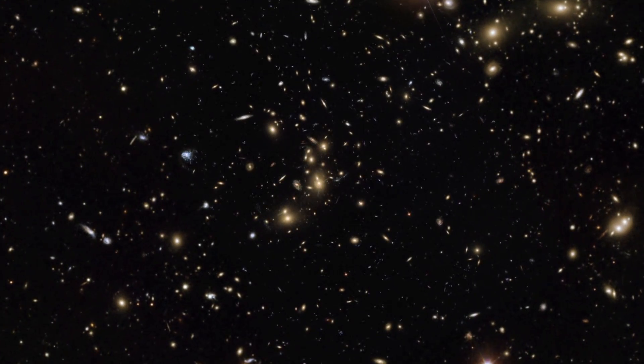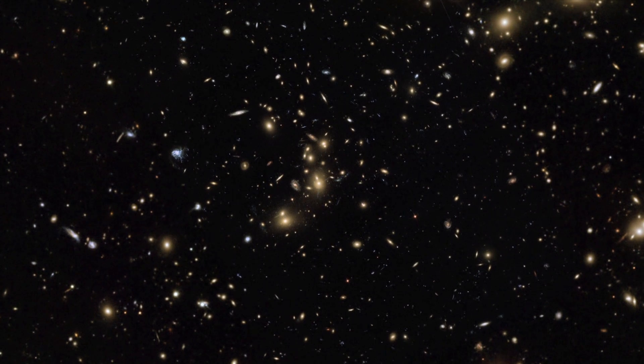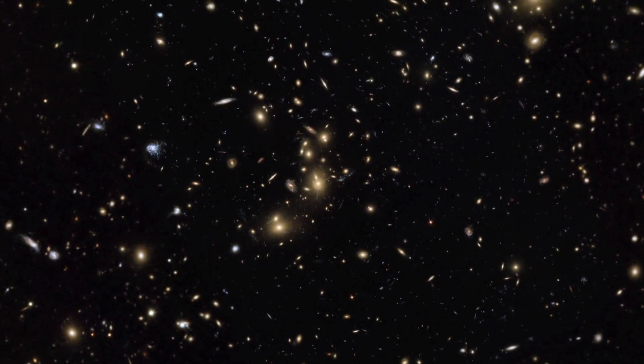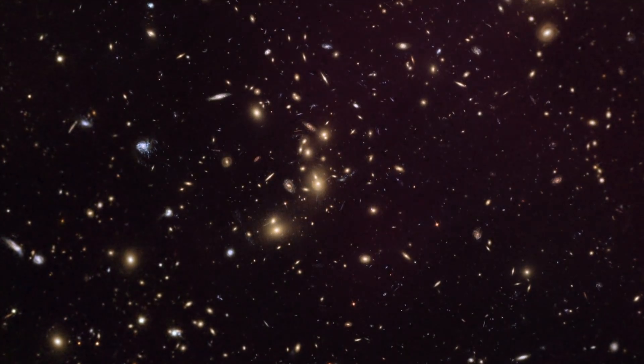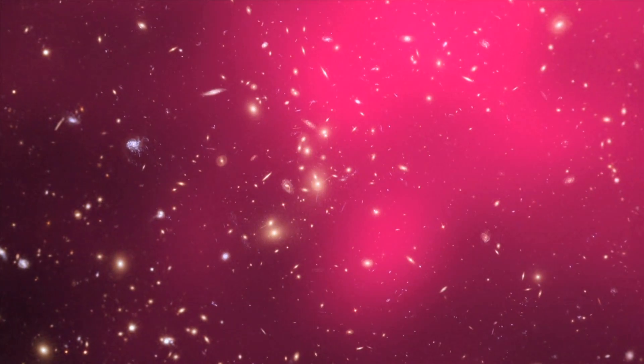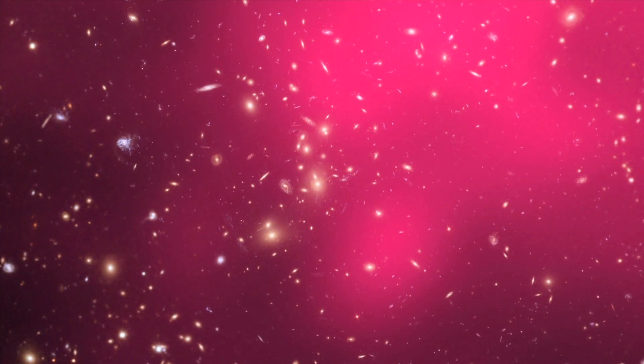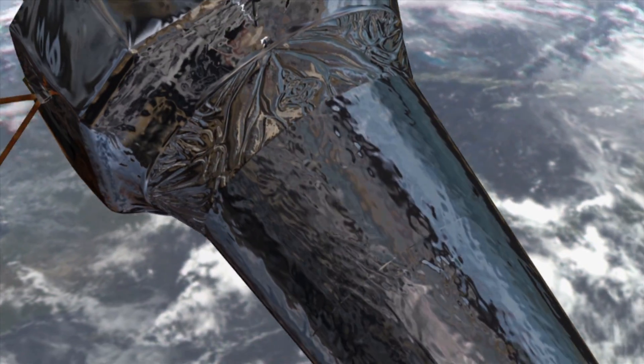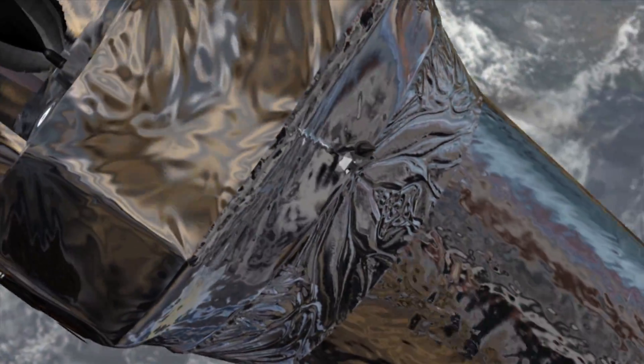The galaxies in Pandora's cluster are clearly visible in images from Hubble and ESA's Very Large Telescope, but they only make up about 5% of the cluster's mass. About 20% is hot gas, which is shown here in pink. This gas is visible thanks to its X-ray emission, which can be detected with NASA's Chandra satellite.